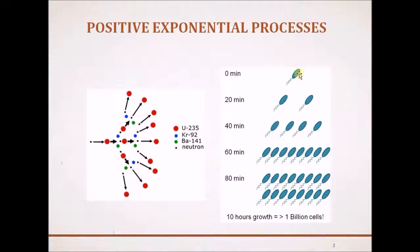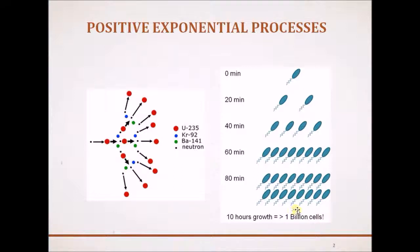Initially, if there are only one or two bacteria, they basically multiply within a few minutes. And within 10 hours, they can grow to as large as 1 billion cells. This is a very good example of an exponential growth process.